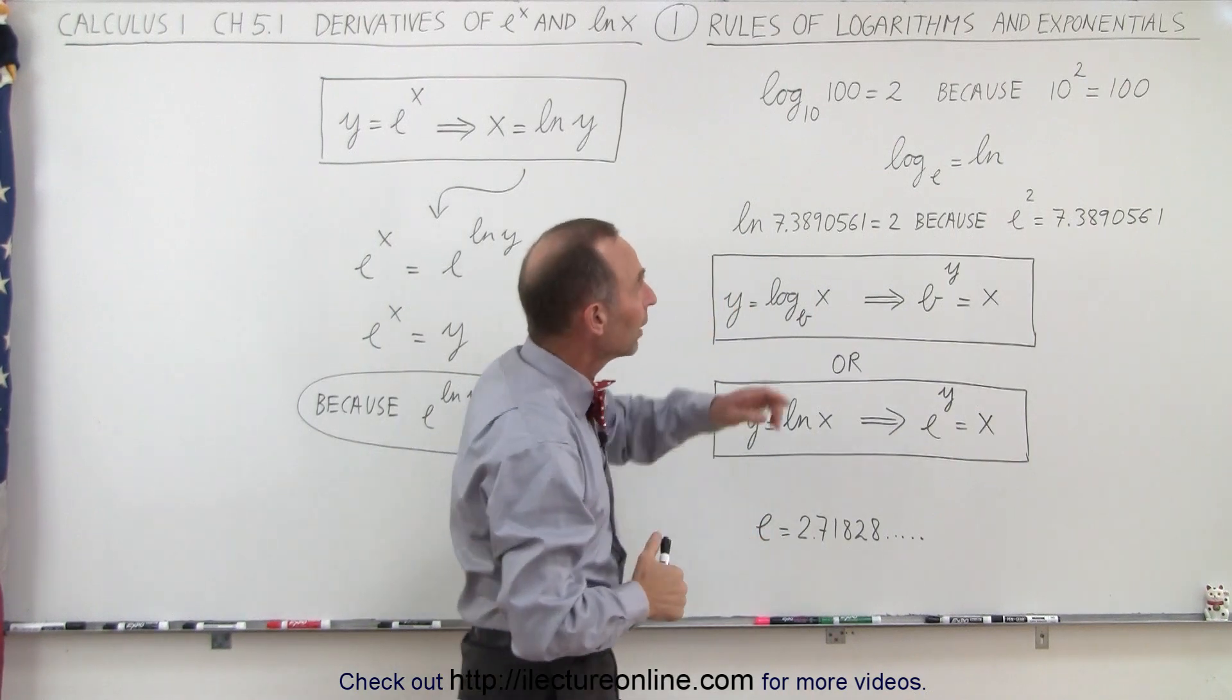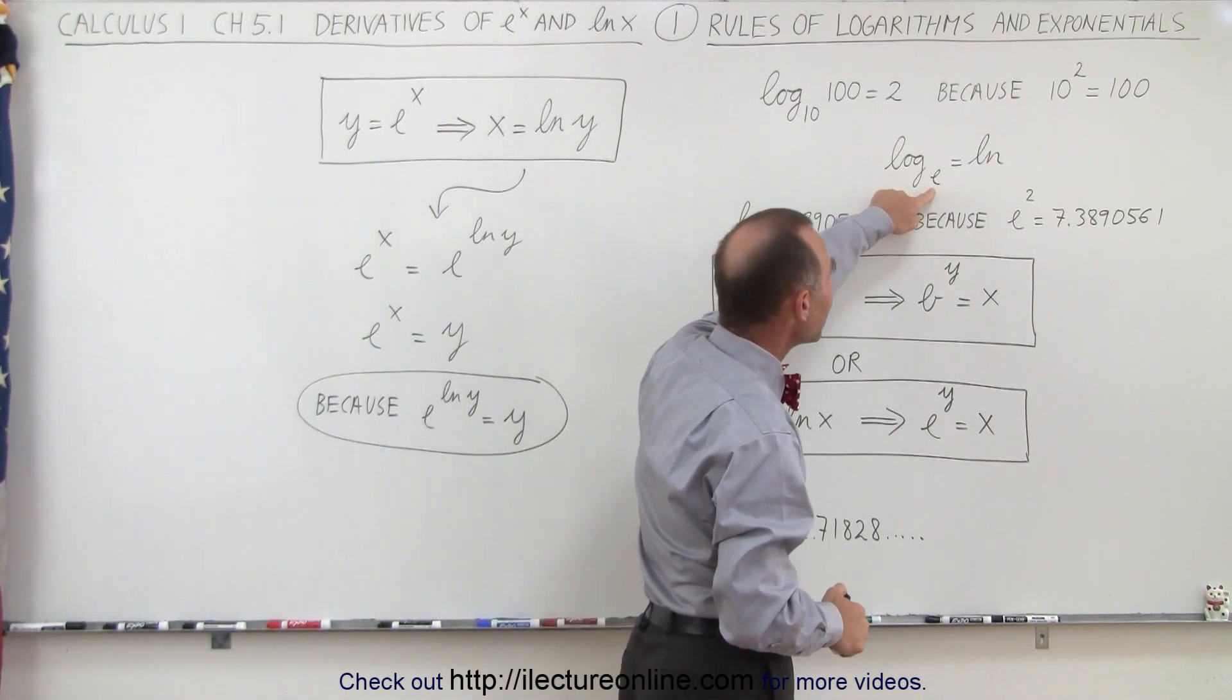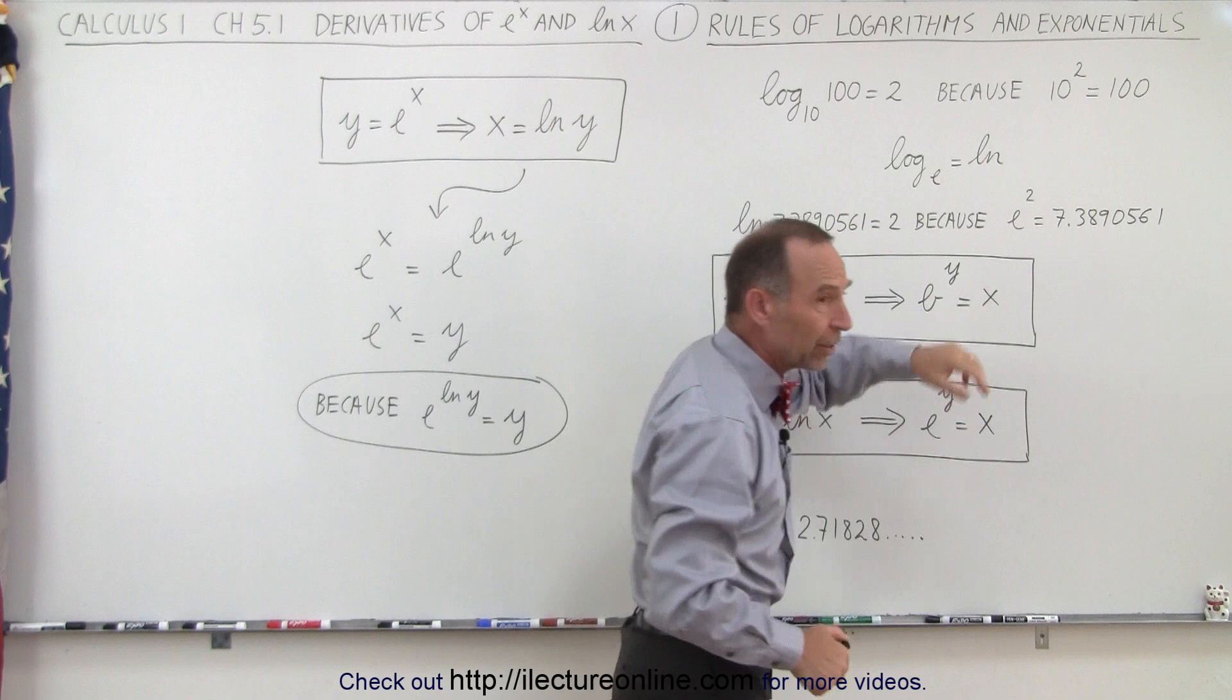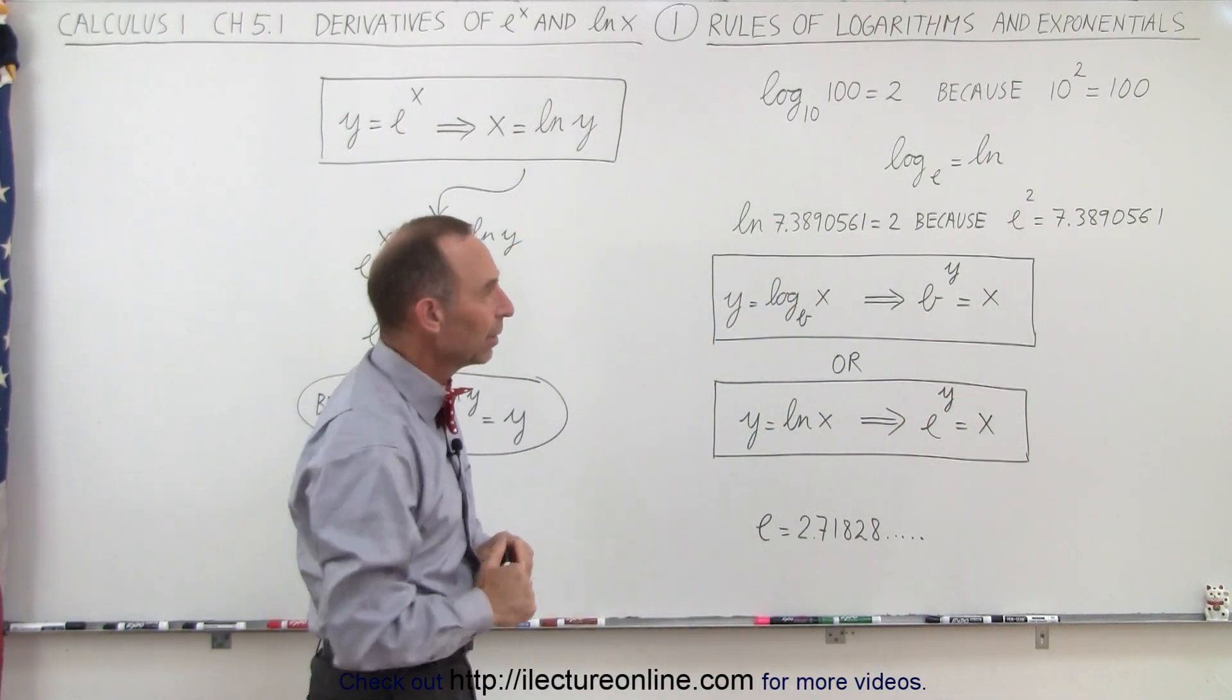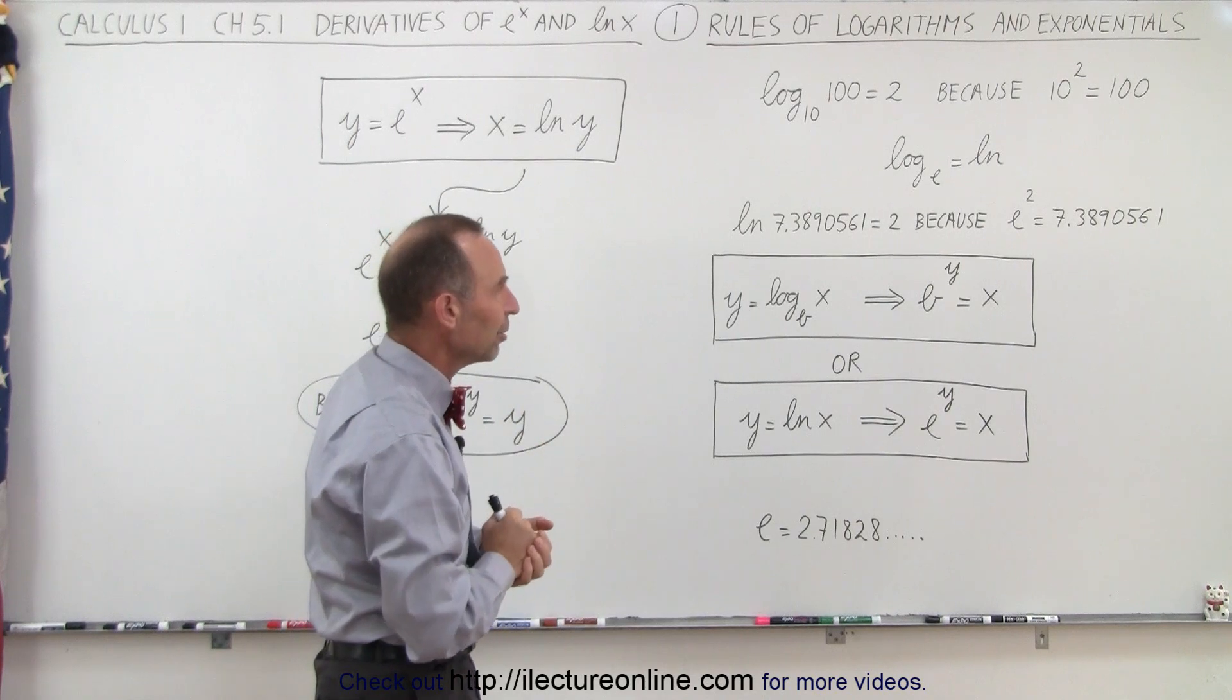We also know that the logarithm to the base e is called the natural logarithm because e is called the natural number. We'll get into that in more detail in a later video.